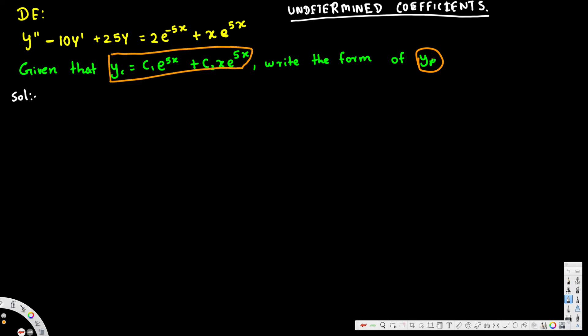Now we have to find the particular solution using undetermined coefficients. If we have 2*e^(-5x), the particular solution pattern is going to be yp = A*e^(-5x).